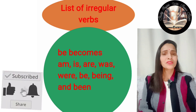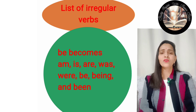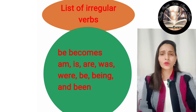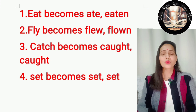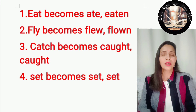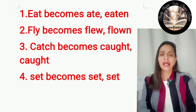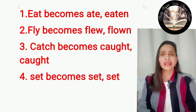Examples of irregular verbs: be → was/were → been; eat → ate → eaten; fly → flew → flown; catch → caught → caught; set → set → set. These are not like regular verbs that end in '-ed'. Irregular verbs change in different ways.